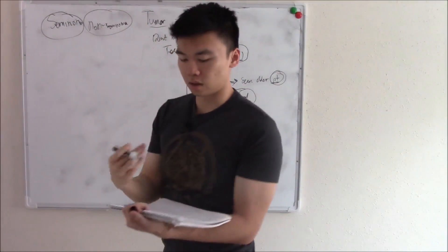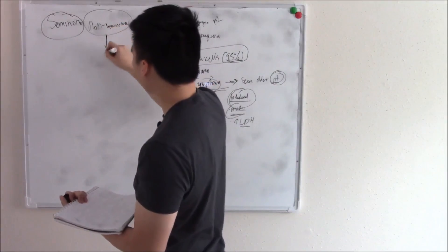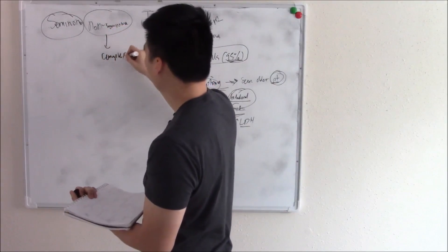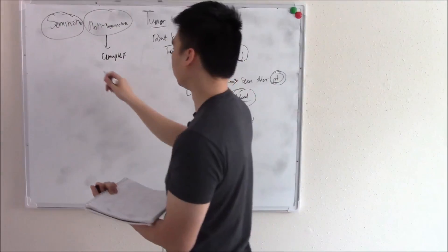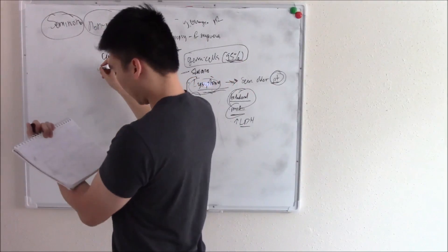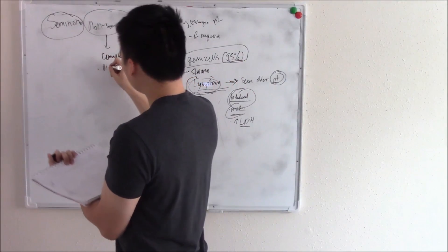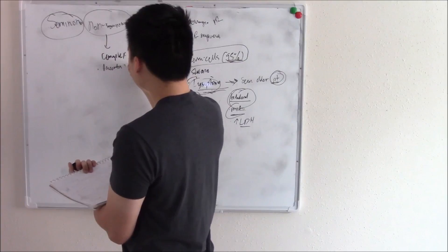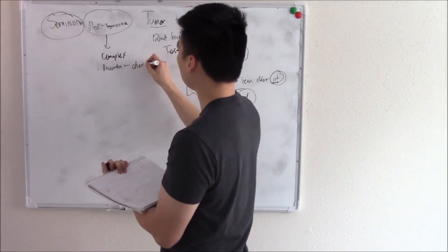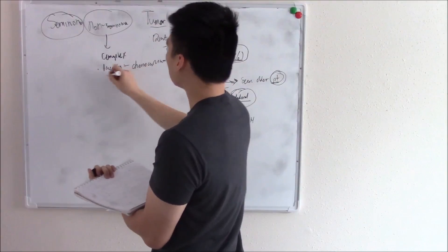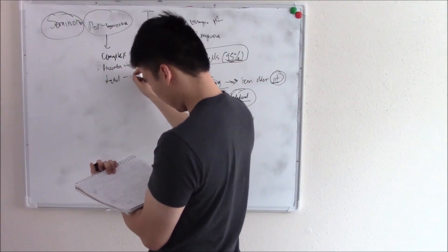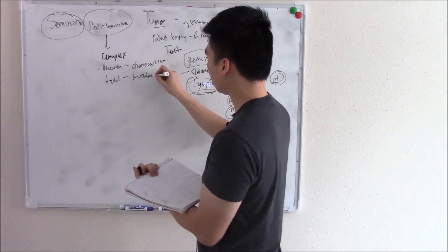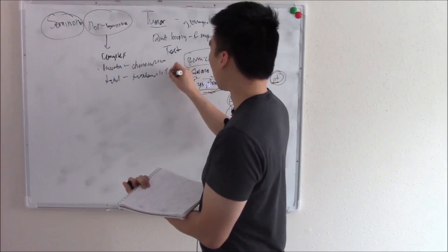Now seminomas are a little bit more homogeneous, but non-seminomas are a little bit more complex. It can come from different types of tissue. So it can come from placental tissue and create things like choriocarcinomas. It can come from fetal tissue, create things like teratomas and embryonal tumors.